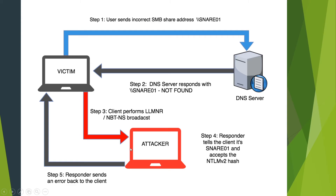On our attacker machine, we use a tool called Responder — a Python script. Responder tells the client that it has the requested share and accepts the NTLM version 2 hash. After accepting the hash, it sends back an error saying the share was not found. The victim won't suspect anything because it appears to be a legitimate request and response. All we need to do is listen with Responder, and whenever the victim types an incorrect SMB share address, Responder captures the NTLM version 2 hash, then sends the error back to the client.